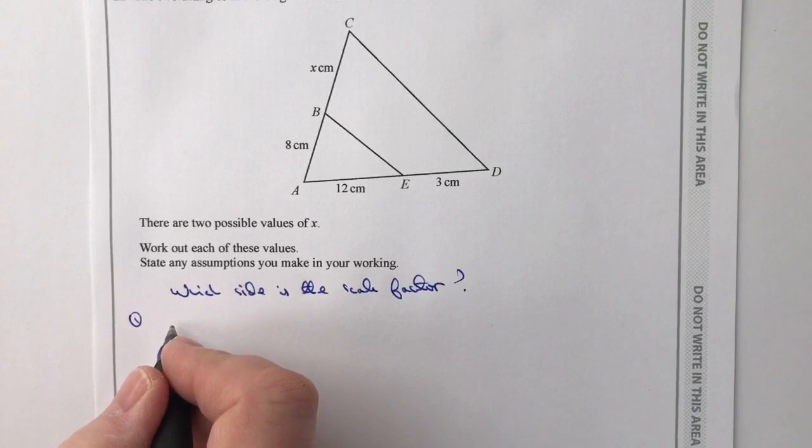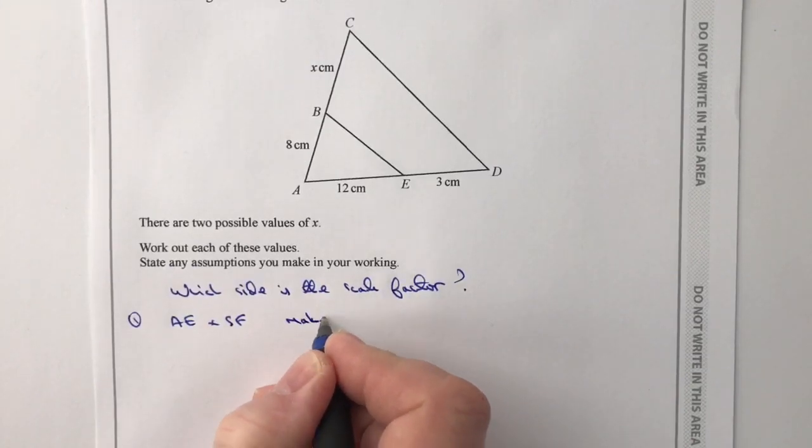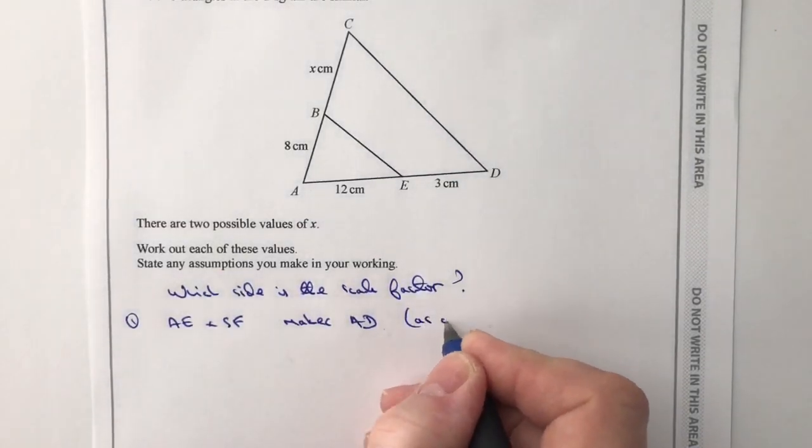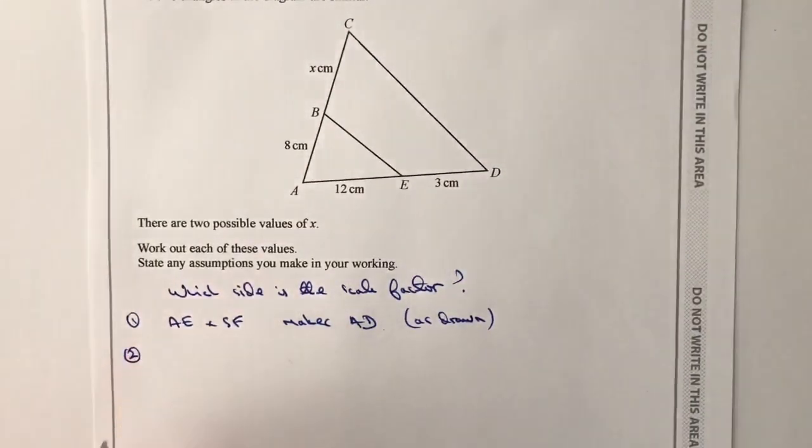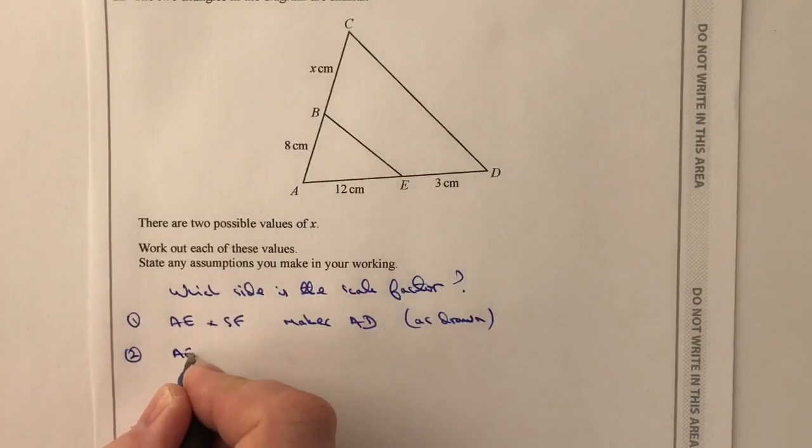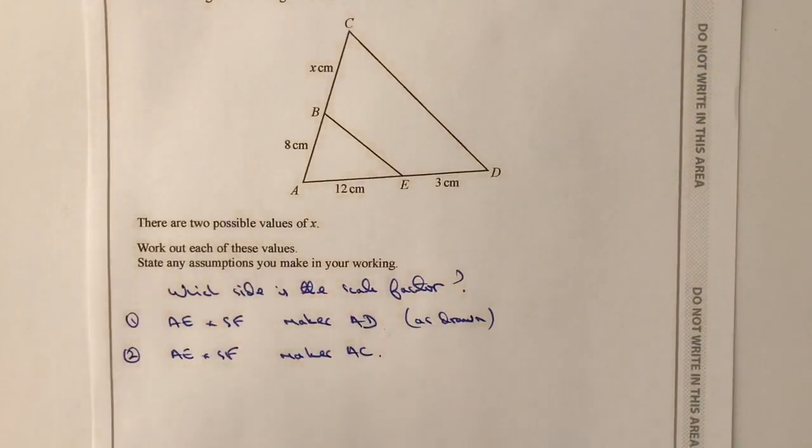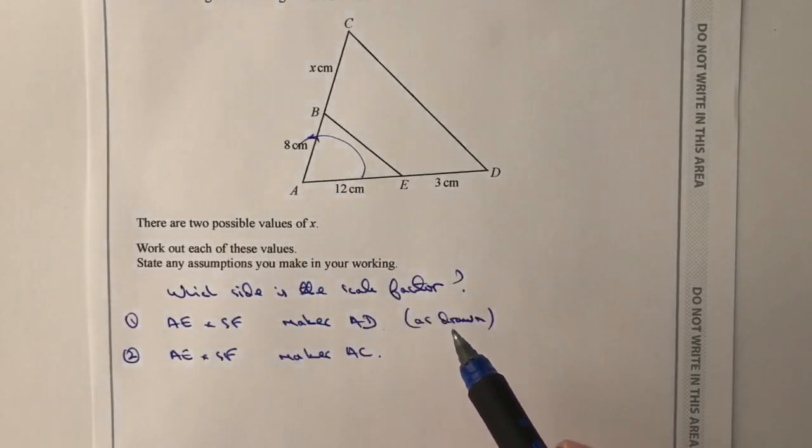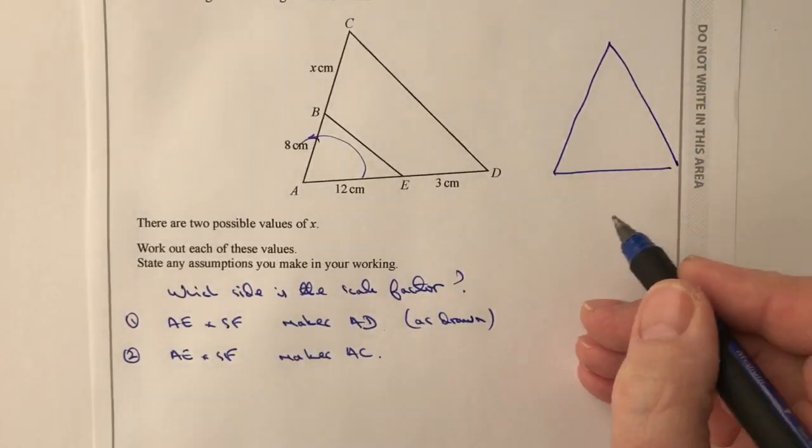As it's drawn we've got case one, and case one is where we've got AE times the scale factor makes AD, and that's actually as it's drawn. The second case, which is the bit that they're kind of referring to, is where we've got AE times the scale factor makes AC. Now that's going to be a little bit tricky to actually draw, but if you can imagine what I'm doing is I'm taking this triangle and I'm flipping it over to that side. So I get a situation where this triangle now becomes AE.